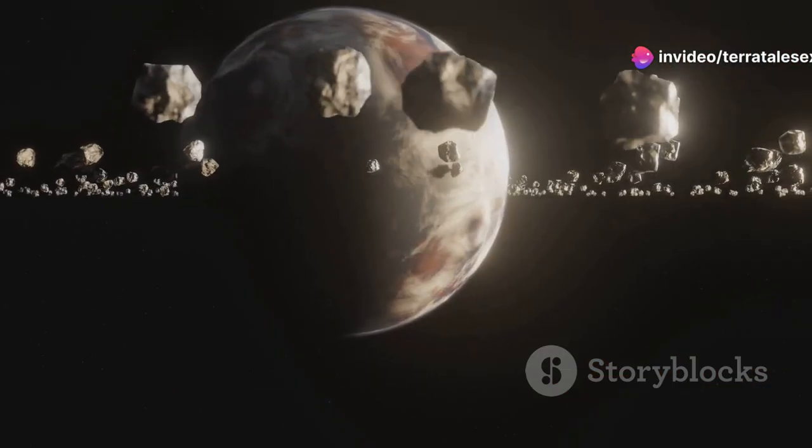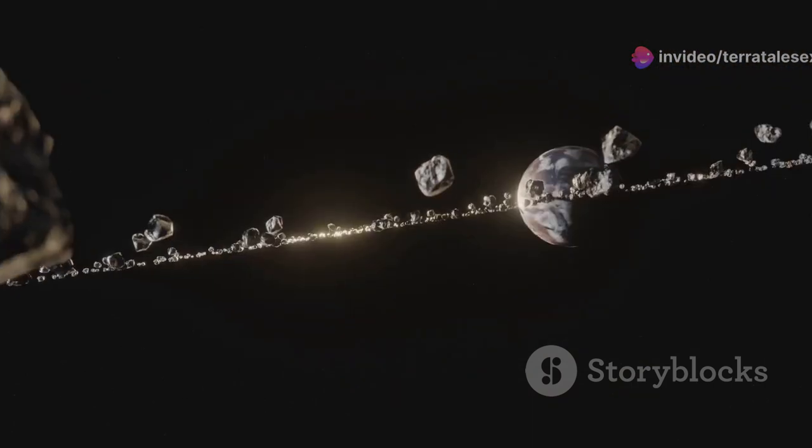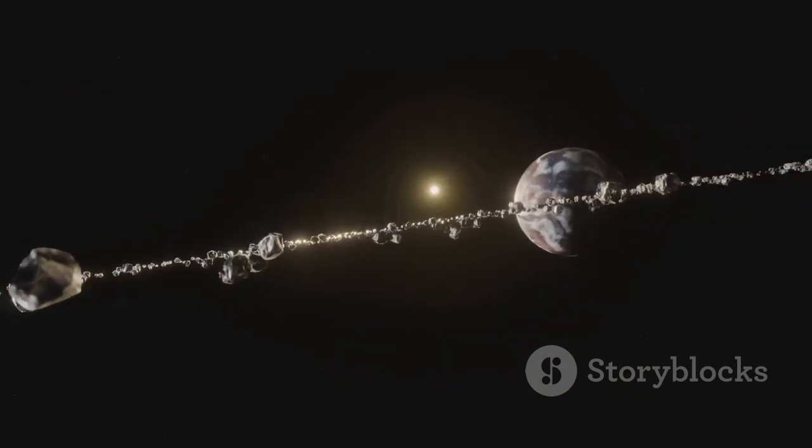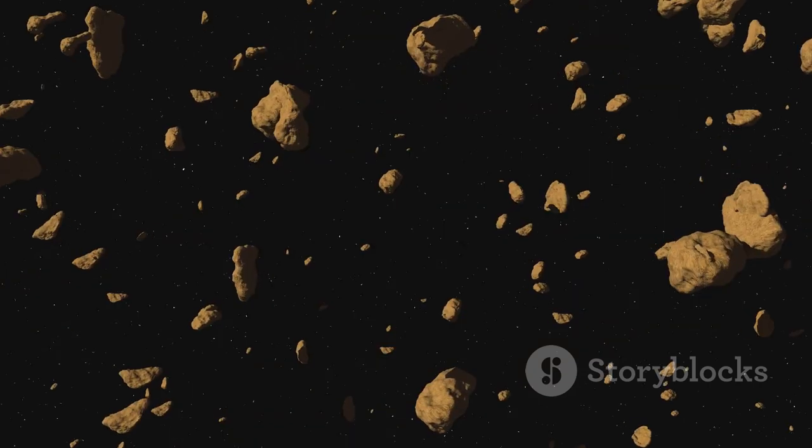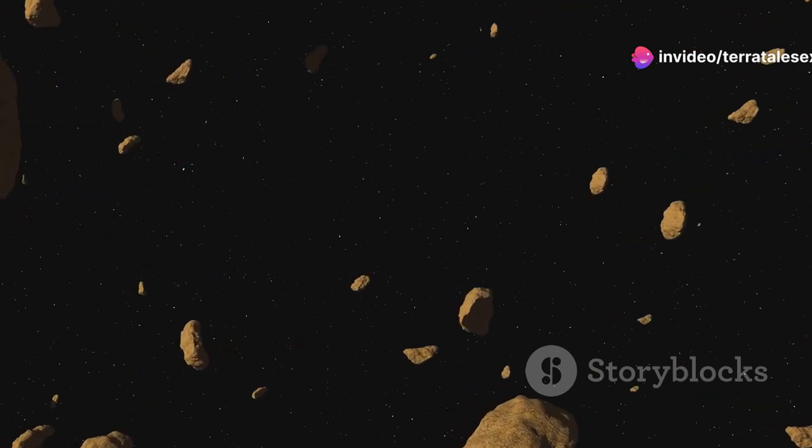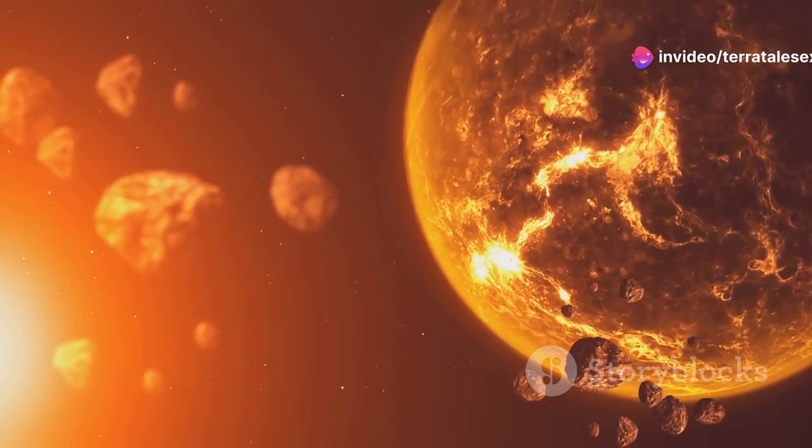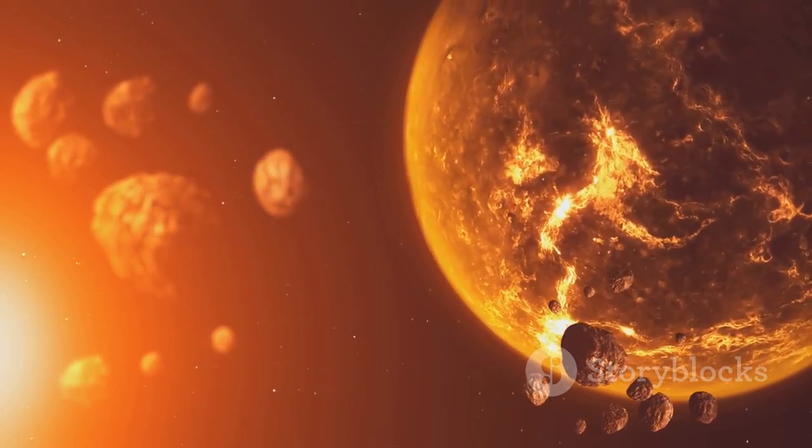Over millions of years, the dust particles coalesced into larger bodies called planetesimals. These planetesimals, ranging in size from meters to kilometers, were the building blocks of planets. The early solar system was a crowded place with countless planetesimals on their own chaotic paths. Collisions were frequent, and some planetesimals grew rapidly while others were shattered into pieces.